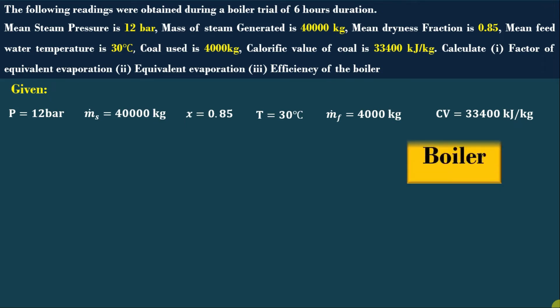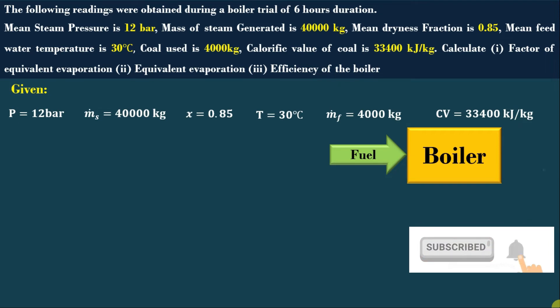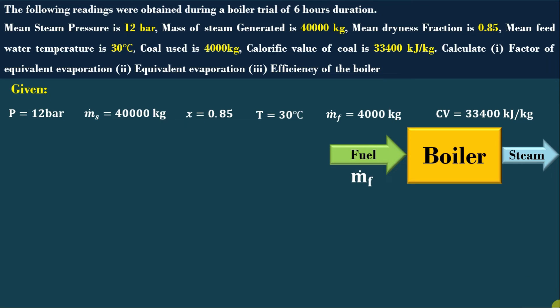First, we will discuss about the boiler. To run the boiler, we have to supply fuel — for this problem, coal is the fuel. We are using 4,000 kg of coal for 6 hours, and the calorific value of the coal is 33,400 kJ per kg of coal. If we multiply these both, we get how much heat is given to the boiler. The mass of fuel used, let's take MF, and steam generated, let's take MS. We have to supply water to generate the steam, and the amount of water supplied is equal to the amount of steam generated.